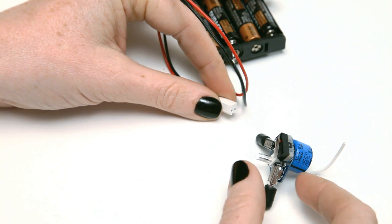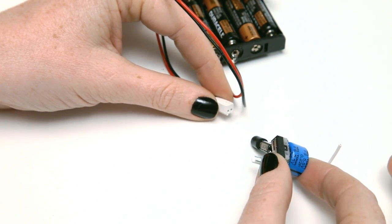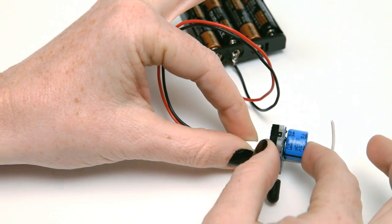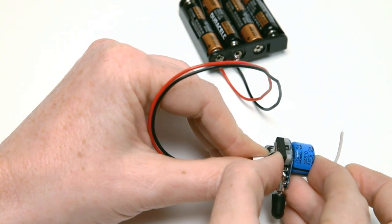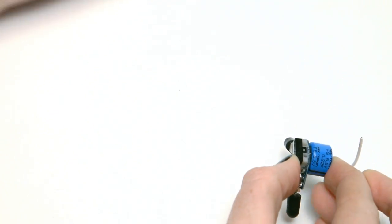To charge the racer, press and hold the switch, then plug in the battery pack. The super cap charges fast. Hold the switch down for 10 to 20 seconds. Then unplug the racer, and when you release the switch, the racer will zoom.